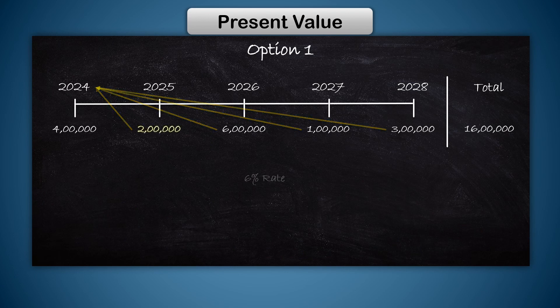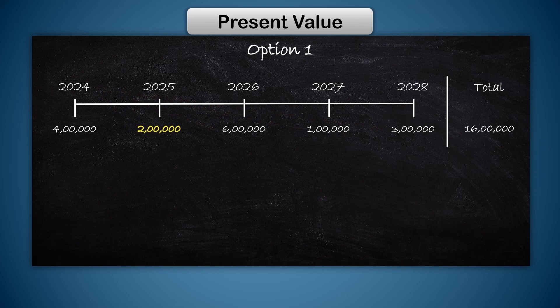This 2 lakh would have lost its value by 6 percent in 2025 due to inflation compared to 2024. To find this lowered value, we have to divide it by the growth factor. Since we have to discount it for one year to bring it from 2025 to 2024, it will be 1.06 to the power 1. After dividing, it becomes 1 lakh 88,679.